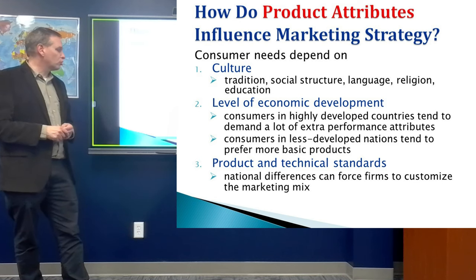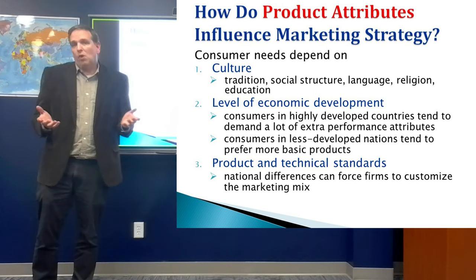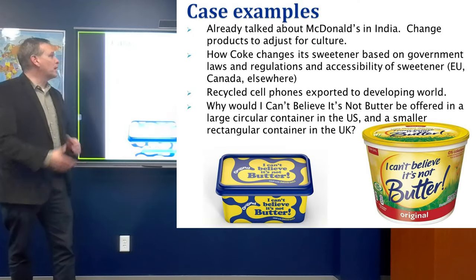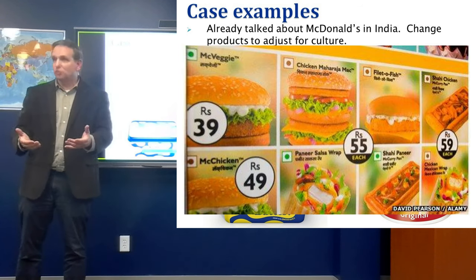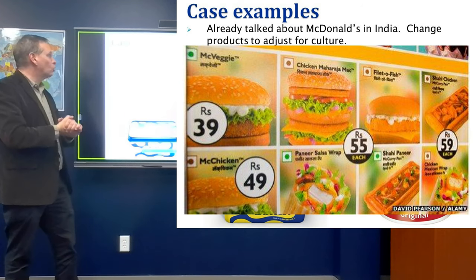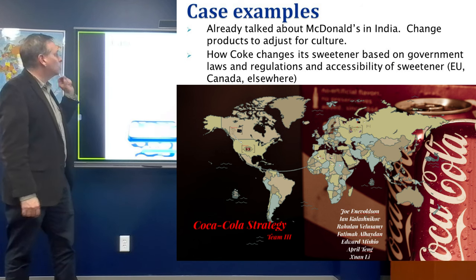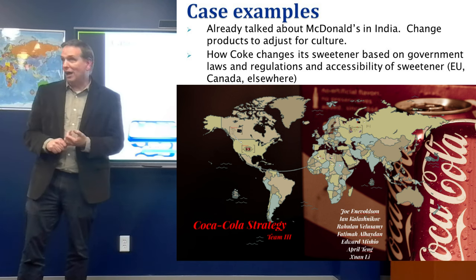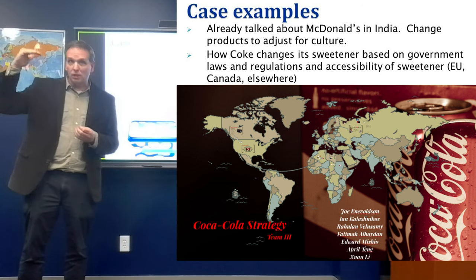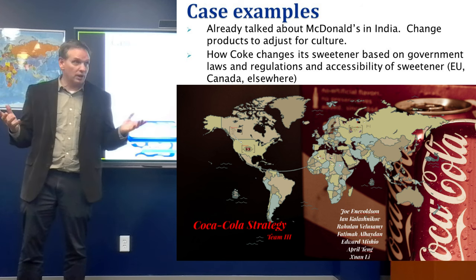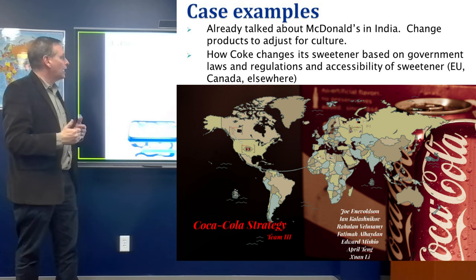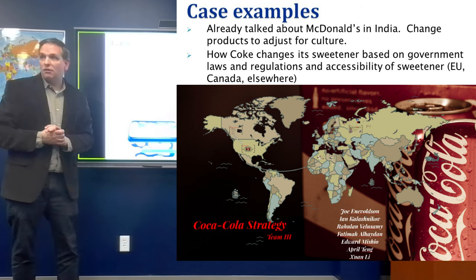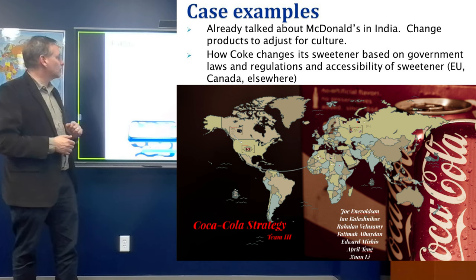Product and technical standards can force firms to customize the marketing mix. McDonald's in India had to change the product to adjust for culture — you're not going to sell beef in India. Coke changes its sweetener based on government laws and regulations: in the EU they avoid high fructose corn syrup; in Canada the amount of sweetener in soft drinks has been reduced. Sometimes it's supply chain issues — you can't get one ingredient so you use another. But otherwise products are largely standardized, even if forced to change based on rules.